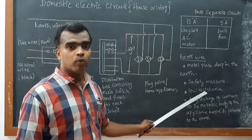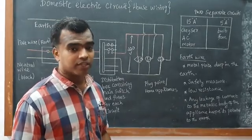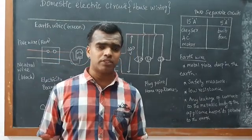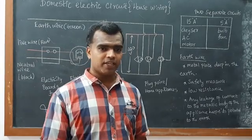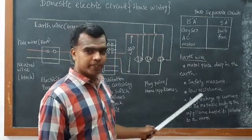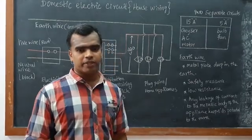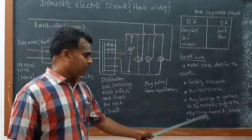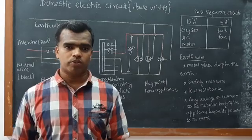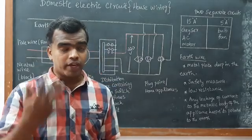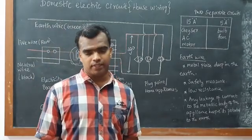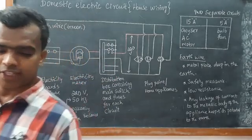The metal plate is deep in earth and it is a safety measure which offers low resistance. If resistance is low, current automatically easily flows. Any leakage of current from the metallic body of the appliances keeps its potential to the ground, so we are not getting any shock from that appliance. I hope you understand well. Thank you, see you in the next video.